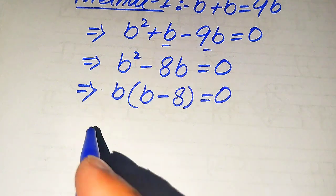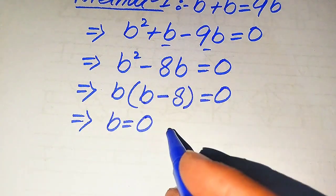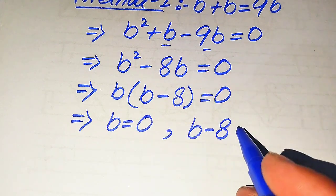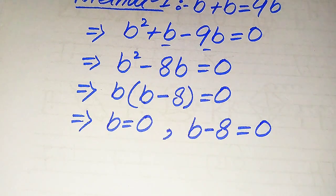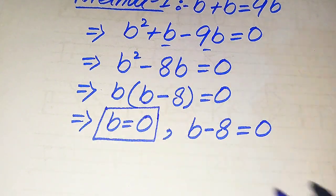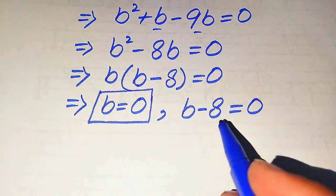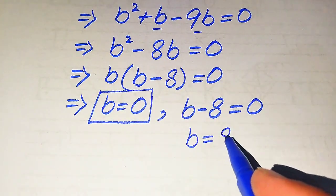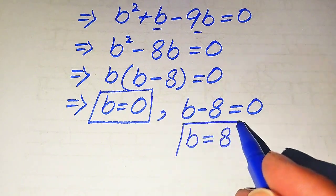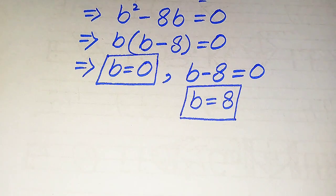We divide this equation into two cases. The first case gives b equals 0, and the second case gives b minus 8 equals 0. This is our first root of the given equation. For the second root, we move minus 8 to the right-hand side and get b equals 8. So from this method we get two roots: b equals 0 and b equals 8.